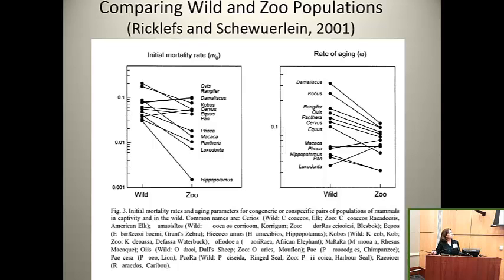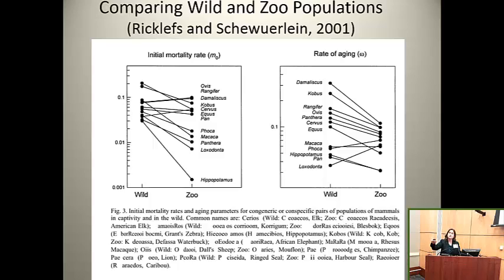Data collected by Bob Ricklefs show that when comparing wild versus captive animals across species, they have lower mortality in a captive setting than in the wild, and their decline over aging is somewhat muted in captivity — in other words, they live longer. That's not particularly surprising, because crises and other challenges happen in the wild and they're protected in captivity.